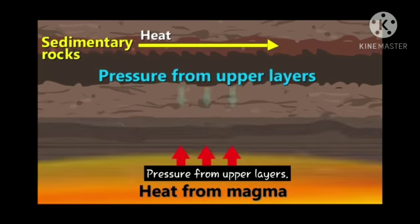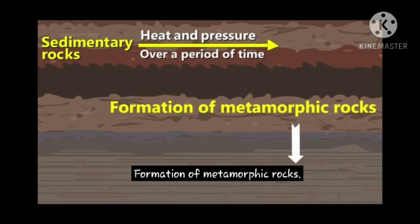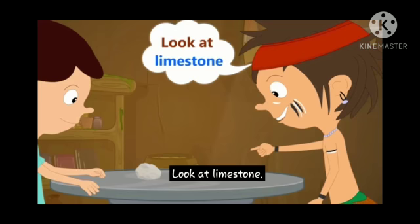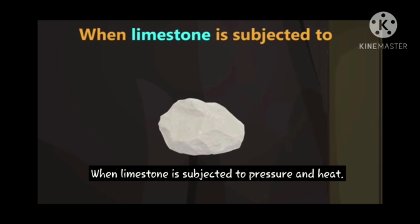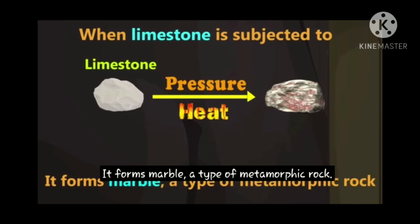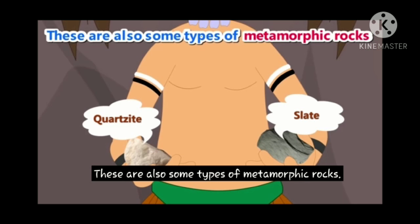Heat from the magma and pressure from upper layers produce metamorphic rocks. Look at the limestone — it is a sedimentary rock. When limestone is subjected to pressure and heat, it forms marble. Marble is a form of metamorphic rock. Quartzite and slate are also types of metamorphic rocks. That's it for today.